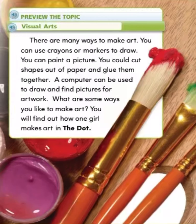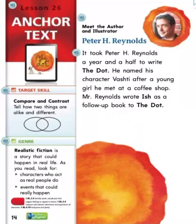You will find out how one girl makes art in The Dot. Compare and contrast: tell how two things are alike and different. Genre: realistic fiction is a story that could happen in real life. As you read, look for characters who act as real people do and events that could really happen. Meet the author and illustrator, Peter H. Reynolds. It took Peter H. Reynolds a year and a half to write The Dot. He named his character Vashet after a young girl he met at a coffee shop. Mr. Reynolds wrote Ish as a follow-up book to The Dot.